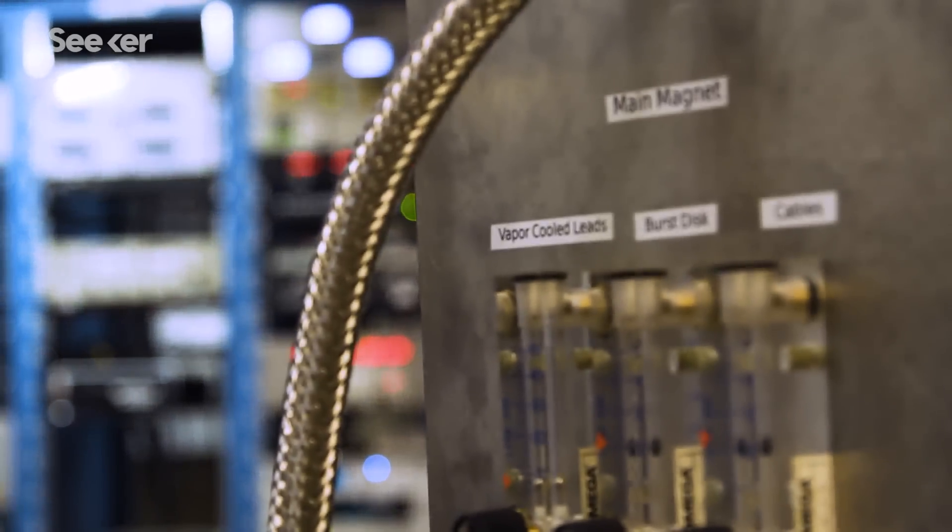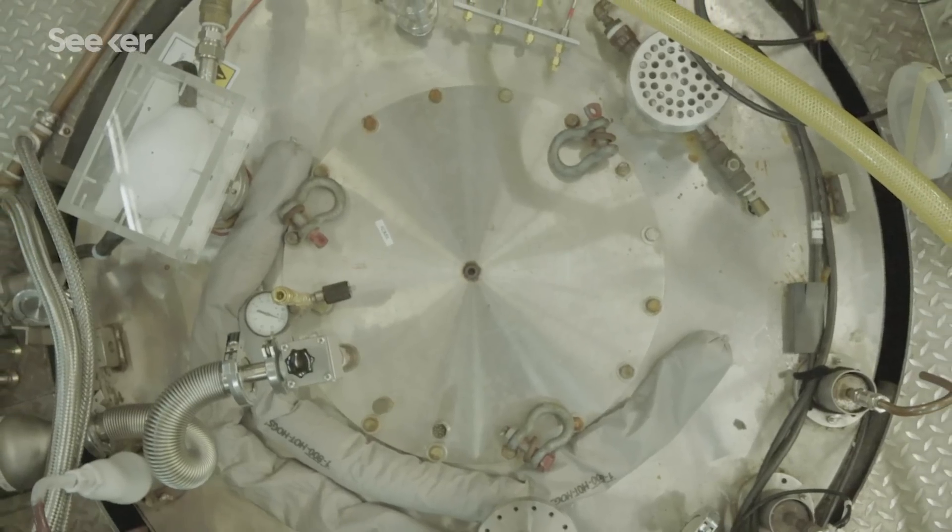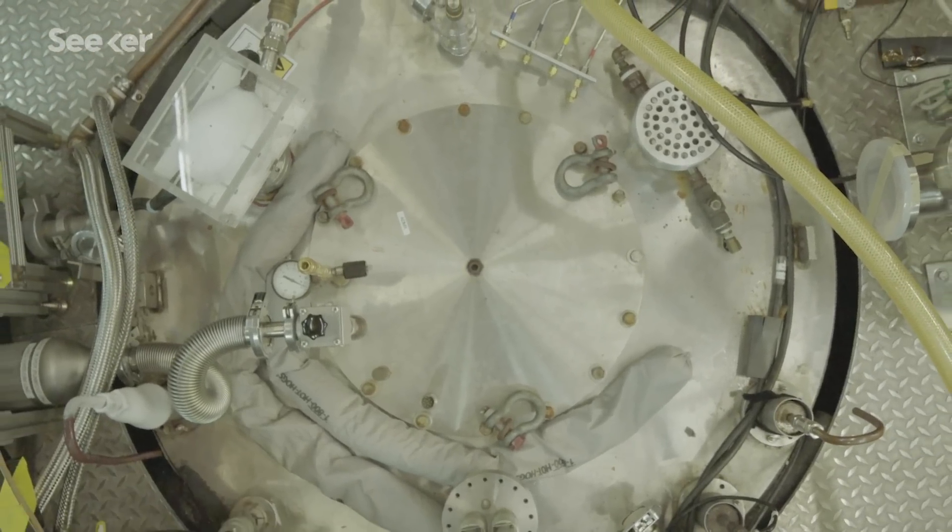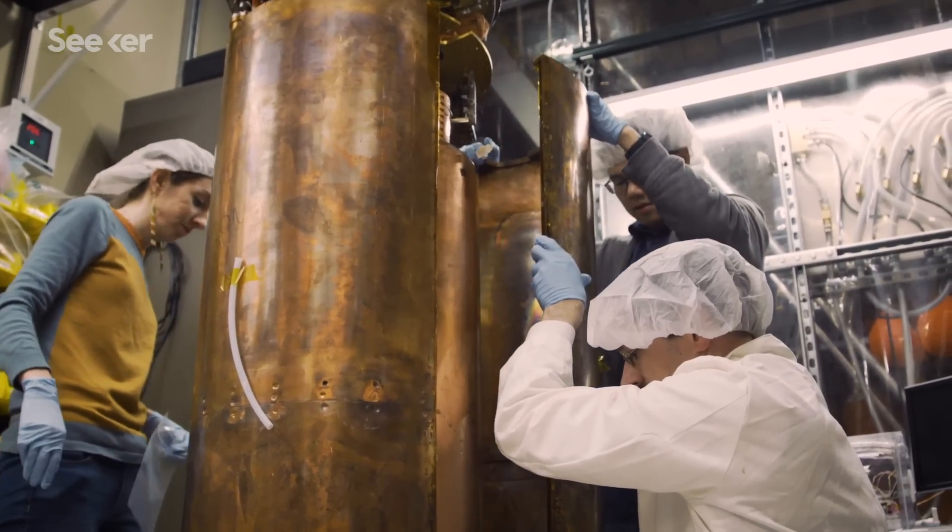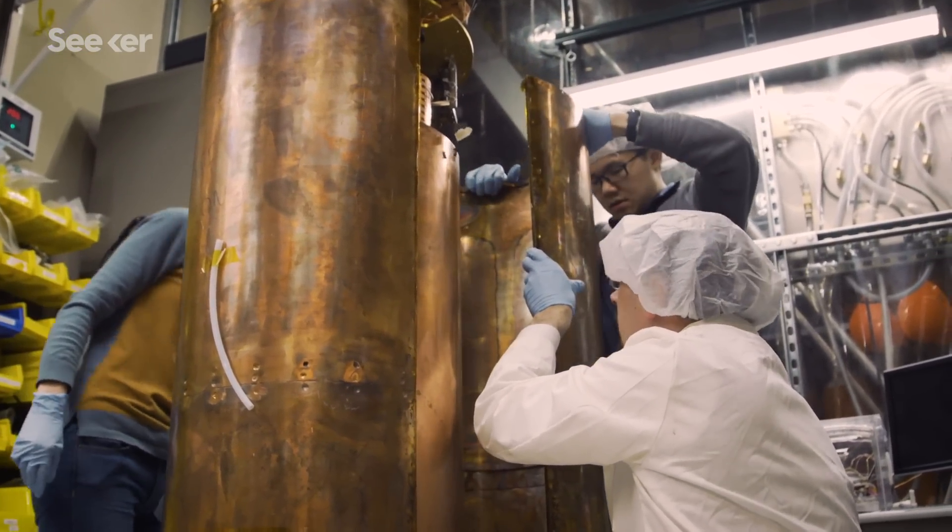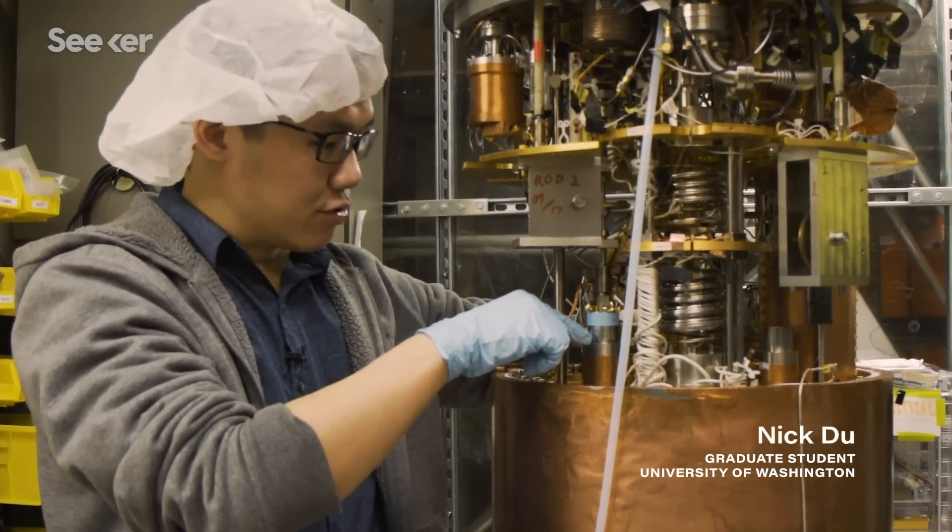The whole experiment sits in a large magnet, around eight Tesla. And that promotes the conversion of axion dark matter into detectable radio waves. And we do this inside a microwave cavity, which is like a big soda can made out of copper.